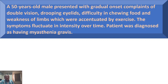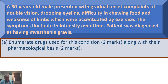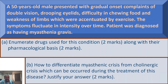Our aim here is not to ask you the diagnosis. In pharmacology, the diagnosis will be given because that is evaluated in medicine and other clinical subjects. The questions are: enumerate the drugs used for this condition along with their pharmacological basis, and how to differentiate myasthenic crisis from cholinergic crisis. You have to justify your answer.